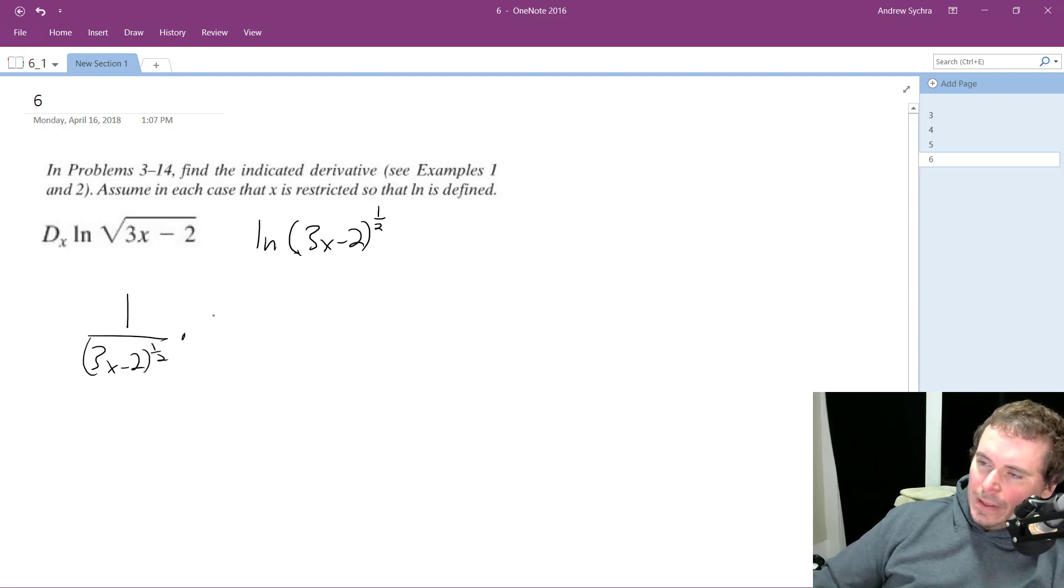And then we take the derivative on the inside, so we get 1 half times 3, which is this, and then 3x minus 2 raised to the negative 1 half.